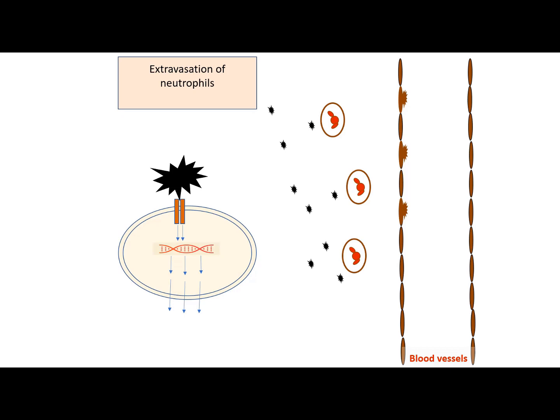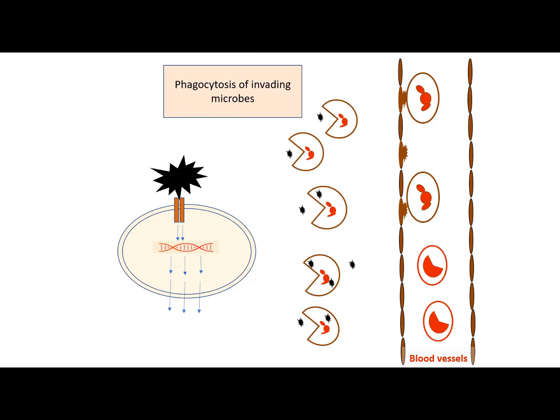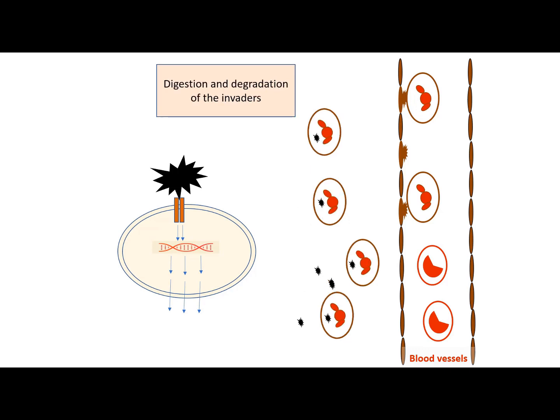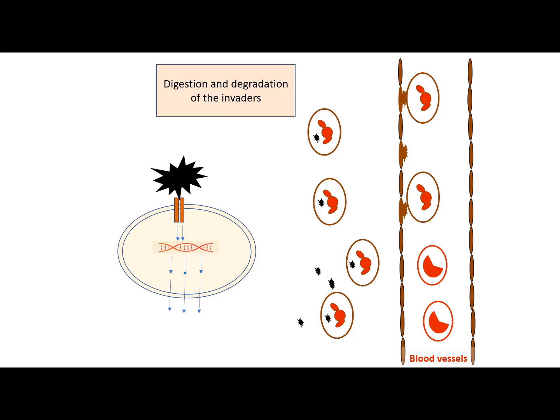Then, the extravascular neutrophils start to phagocytose the invading microbes and digest and degrade the invaders. It is important to know that the neutrophils are usually the first arrivals to the sites of microbe invasion. In fact, they are the predominant cells in pus.